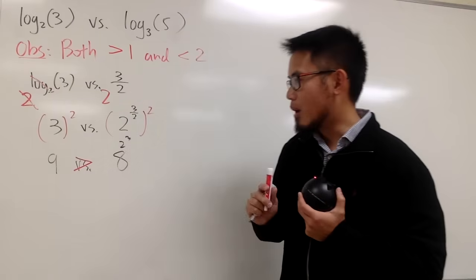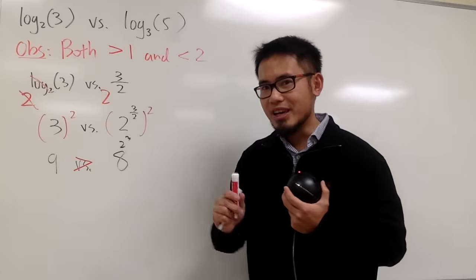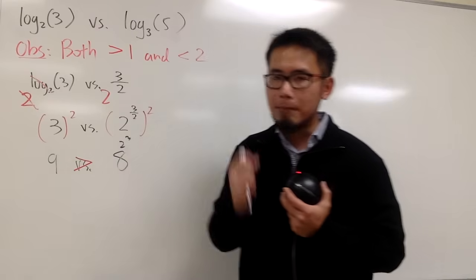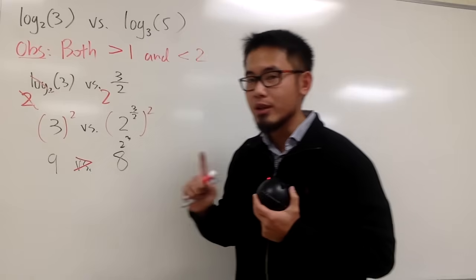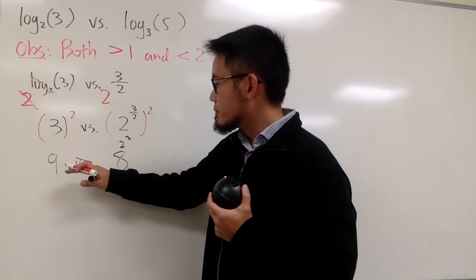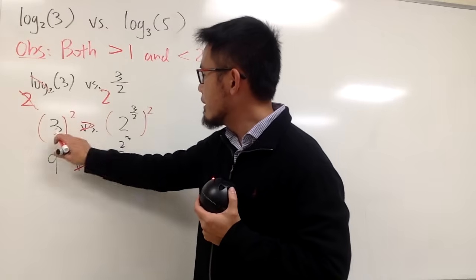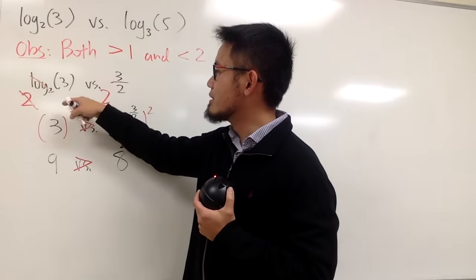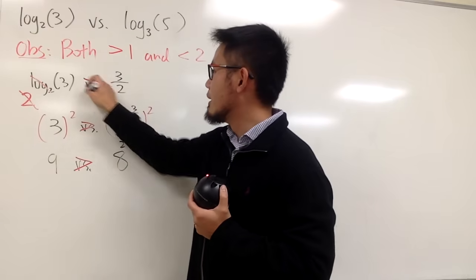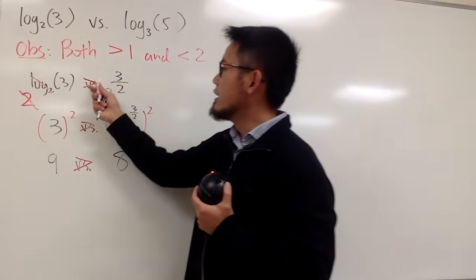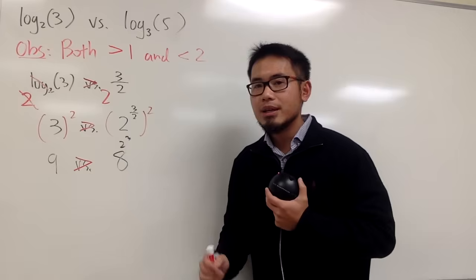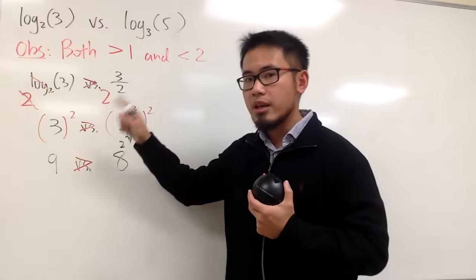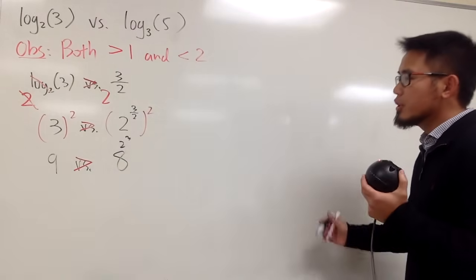Now, here is the important part. Can we go backwards? Yes. Because x squared, it's an increasing function if the input is positive. And they are positive numbers, so we can actually go backwards. So, now I can say 3 was bigger than 2 to the 3 over 2 power. And then, we can also go backwards because 2 to the x is an increasing function as well. And I can conclude that log base 2 of 3 is bigger than 3 over 2. And I'm just applying the increasing functions for all these steps right here, so the inequalities can go both ways. So, that's good.